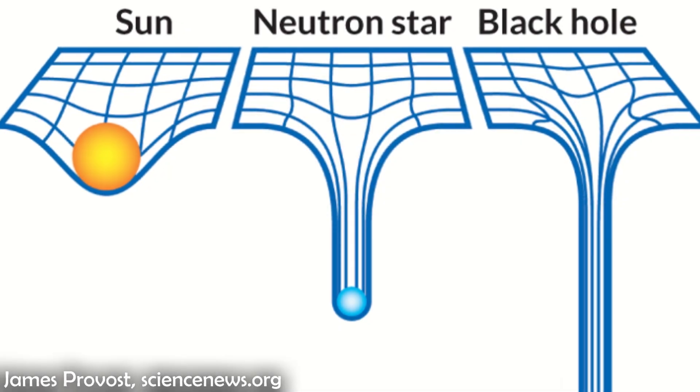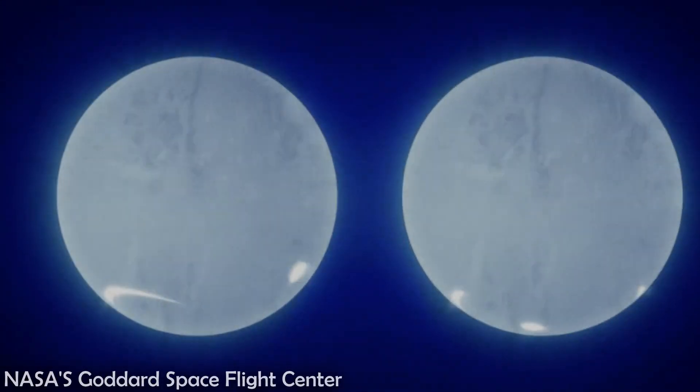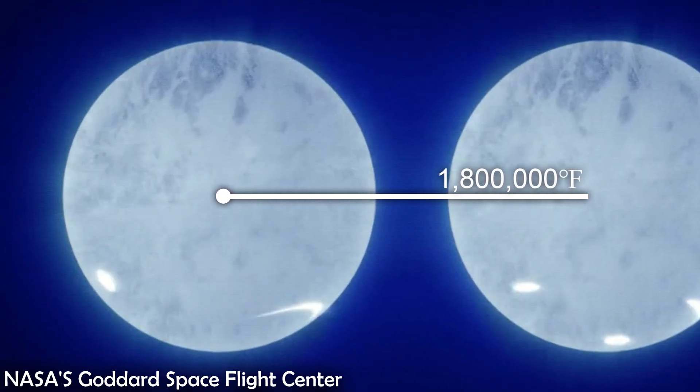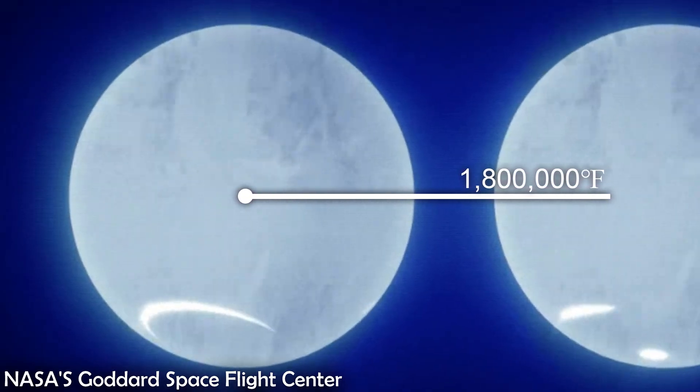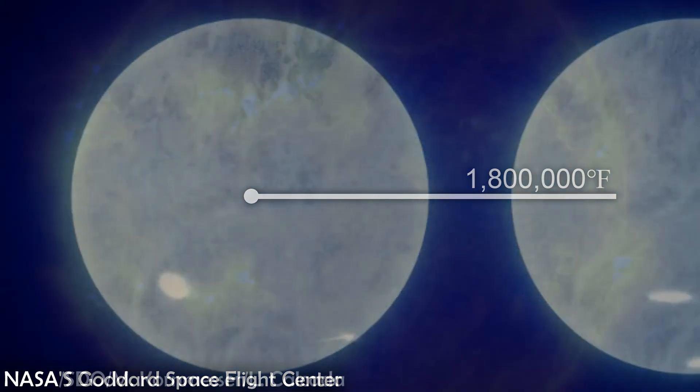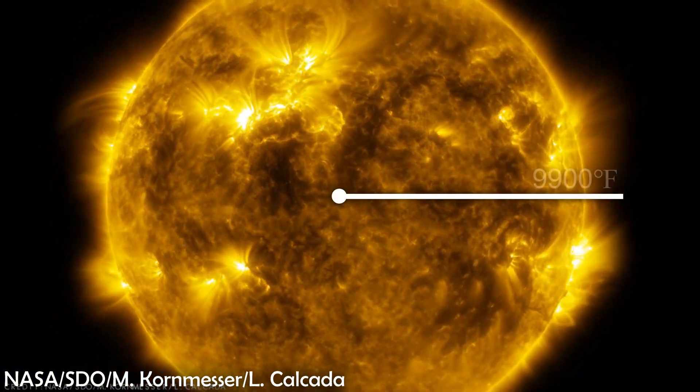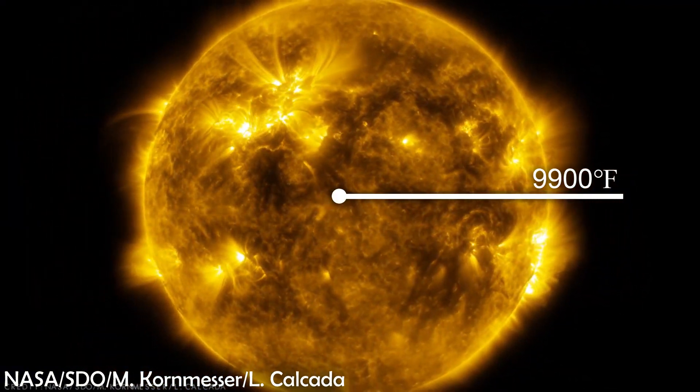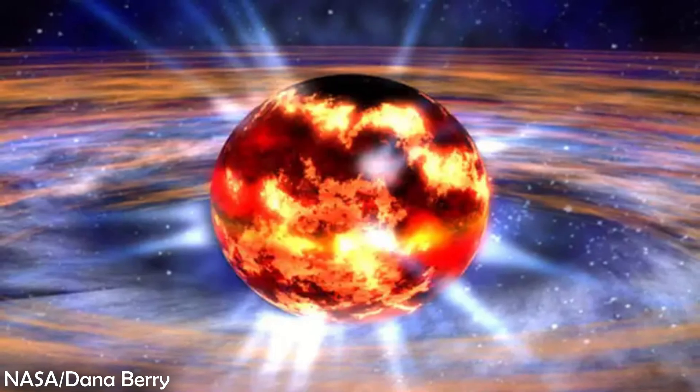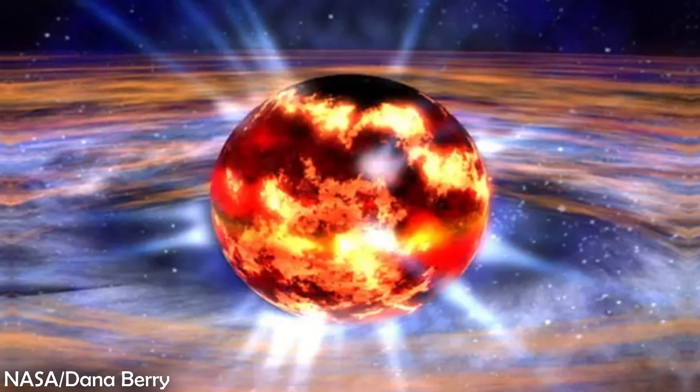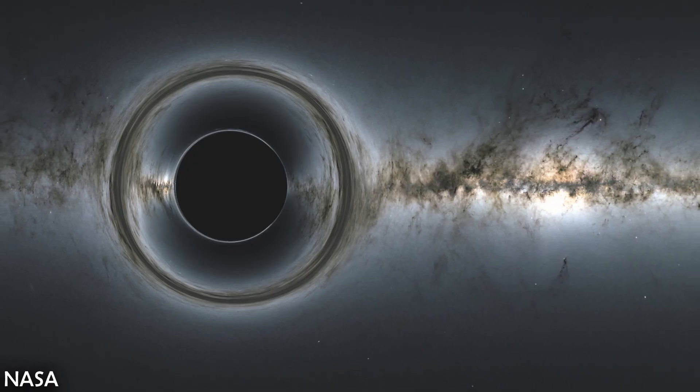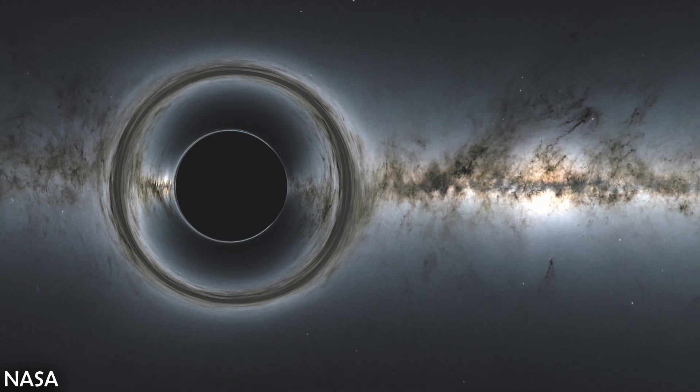Also, because of the immense gravitational pressure, the surface of a neutron star can reach up to 1.8 million degrees Fahrenheit, compared to our sun's measly 9,900. Neutron stars can also bend light due to this gravity. But unlike black holes, the gravity isn't strong enough to trap light.